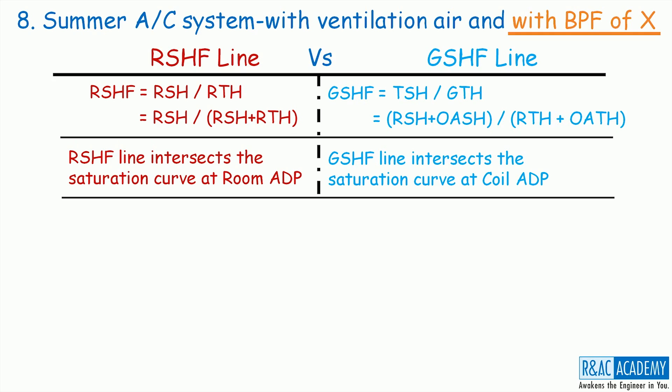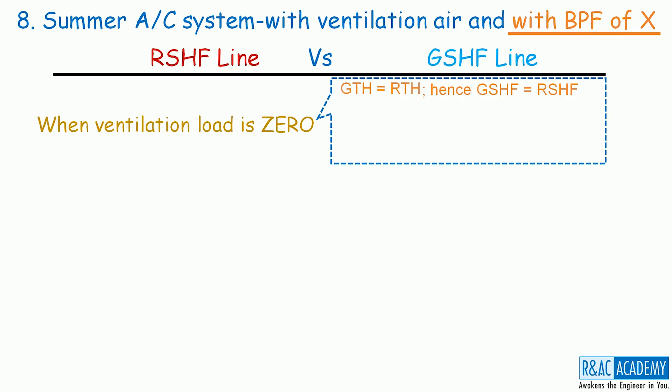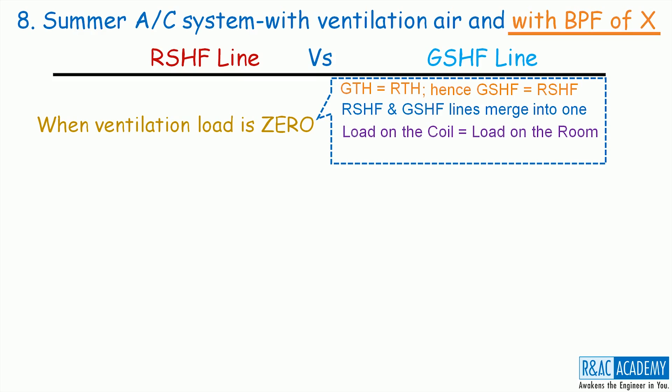Let us now look at the three typical cases in summer air conditioning systems. The first one is the summer air conditioning system with 100% recirculation air, that is with zero ventilation load. We discussed this case in lecture number 6. In this case, the outside air sensible heat load and the outside air latent heat load are zero. Hence, the grand total heat is equal to the room total heat. Because of this, the RSHF line and the GSHF line will merge into one line on the psychrometric chart, and the heat load on the coil and on the room are also the same.